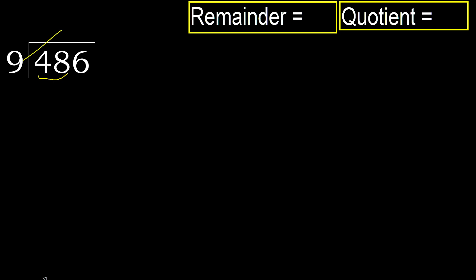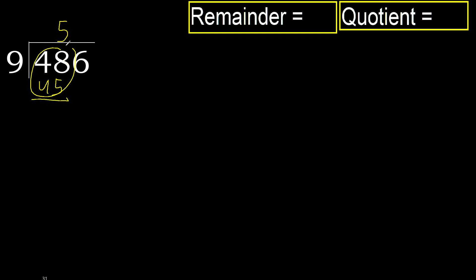9 multiplied by which number is nearest to 48, but not greater. 9 multiplied by 6 is greater. Multiply by 5. 45 is not greater. Okay. Subtract. 48 minus 45 is 3.